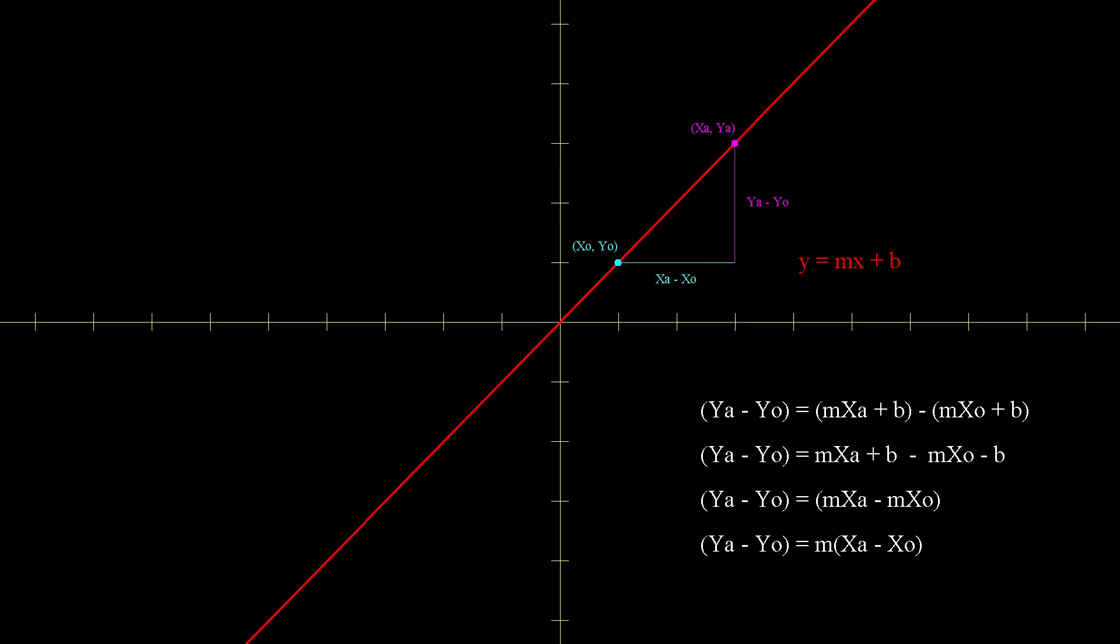What happens if Xa, Ya approach X0, Y0? Well, Xa minus X0 and Ya minus Y0 get smaller and smaller. As Xa, Ya get infinitely close to X0, Y0, Ya minus Y0 and Xa minus X0 get infinitely small. We can write this infinitely small change in y as dy, and this infinitely small change in x as dx. Thus, dy equals m times dx.